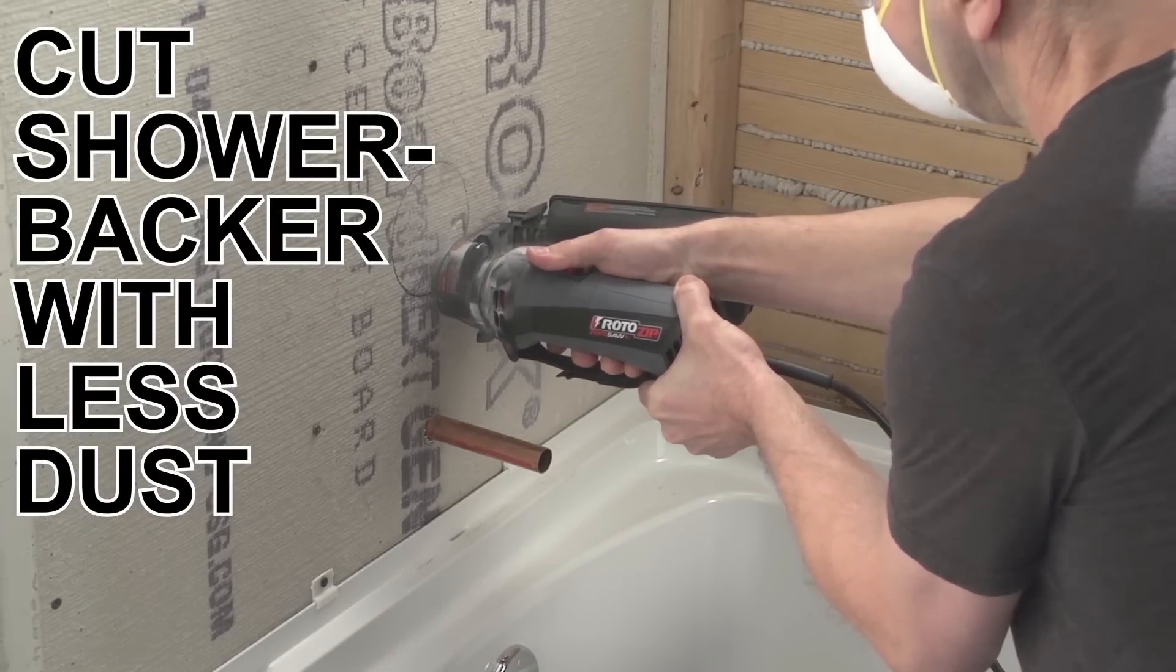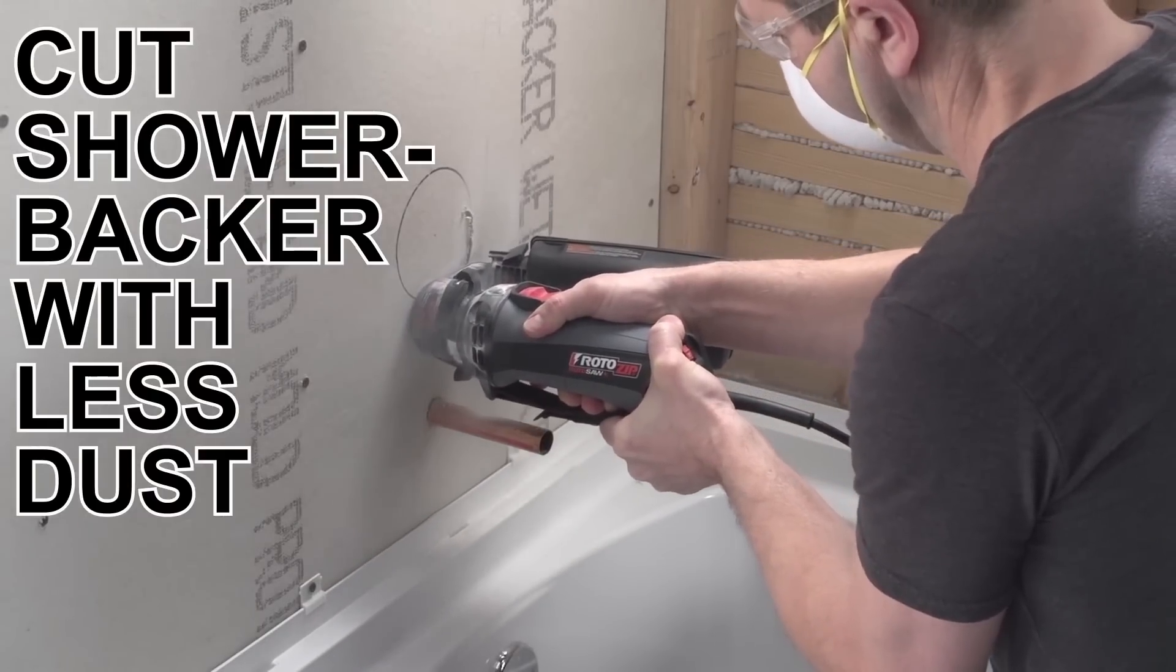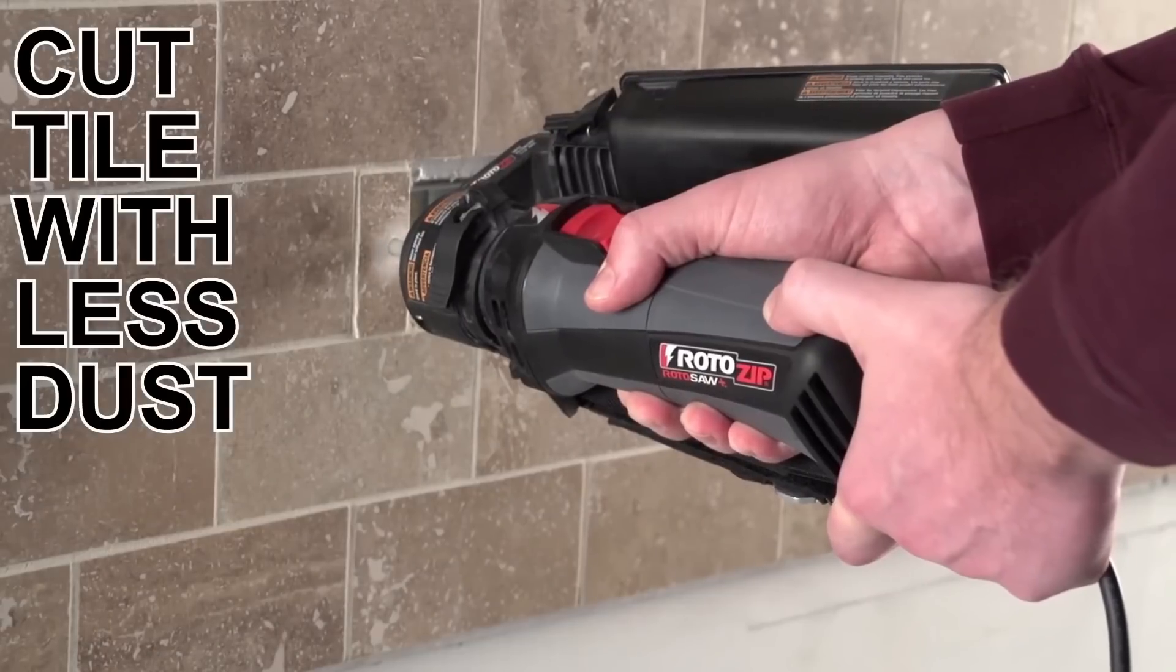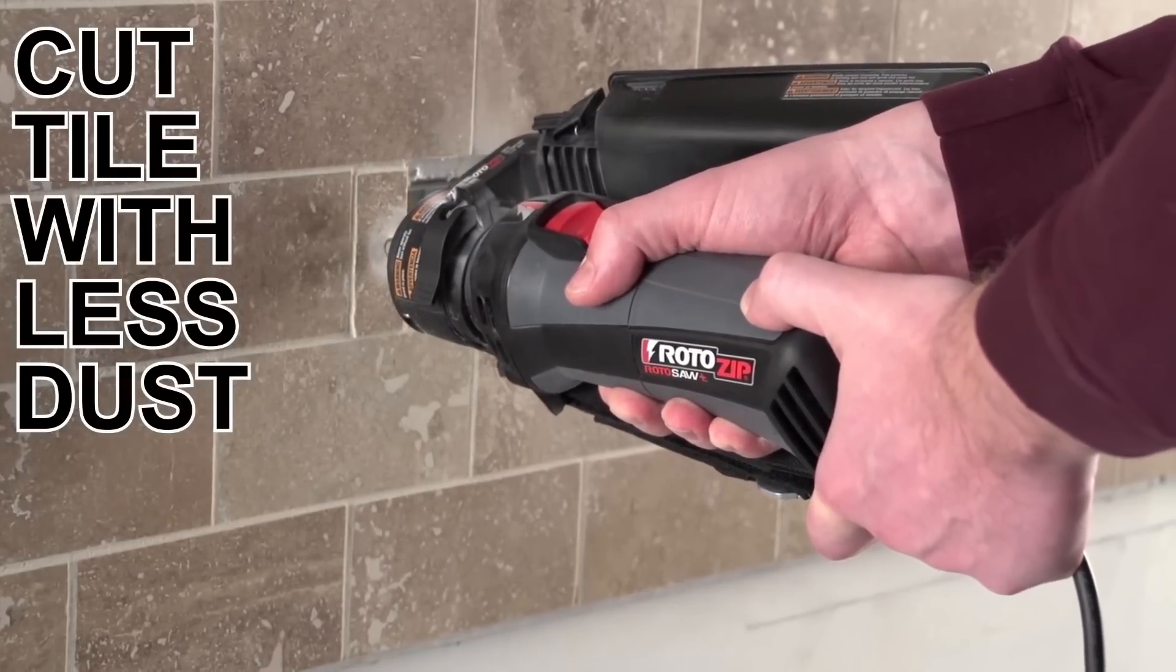Additionally, the Roto Saw Plus features an on-off switch, variable speed, and soft grip to improve accuracy and control.